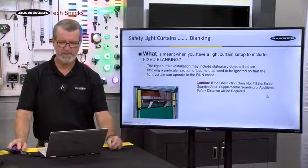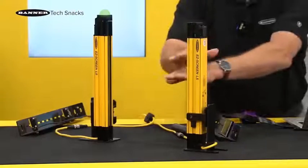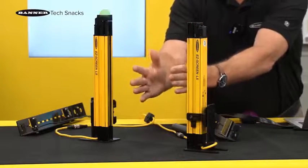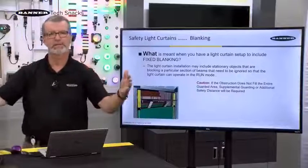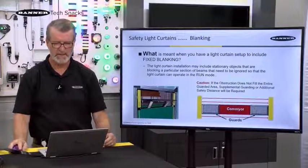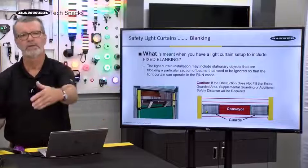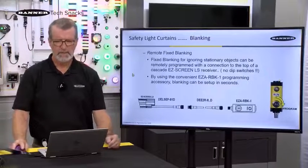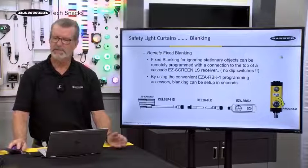One caution: the obstruction must span the whole width of the curtain. For example, if a conveyor is only three or four feet wide but your light curtains are separated at six feet, you have to fill in the space on the side — because that gap is no longer protected, and someone could reach around the conveyor and get into a hazard.